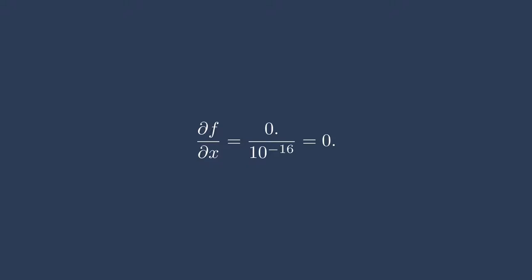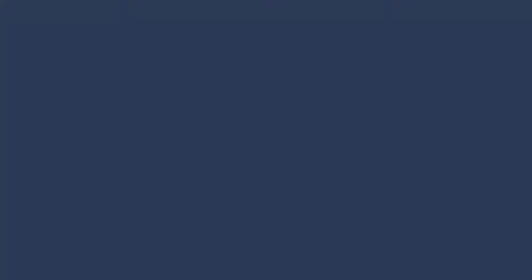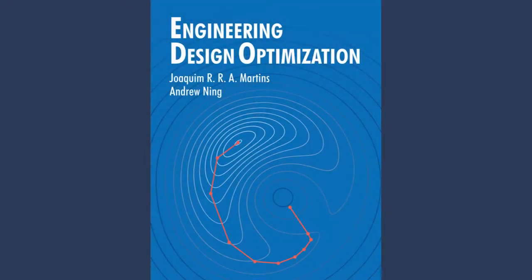So there's a really fine balance between the correct step size to use when you're using finite difference. I highly recommend reading section 6.4 in Engineering Design Optimization by Martins and Ning. They have some great graphs and a few figures that really show where it shines and where it doesn't shine. It also helps motivate some of the other methods that I'll be showing in this lecture.